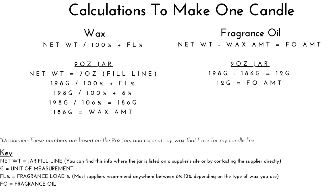I always get the question of how can I make more than one candle — what is that formula? You simply want to use this same formula and multiply it by however many candles you want to make. For example, if I want to make six candles, I take 186 grams times six, which gives me 1,116 grams of wax — that will get me six candles. Same with the fragrance oil: 12 grams times six is 72 grams. So 72 grams of fragrance oil added to 1,116 grams of wax will give you what you need to pour six candles.